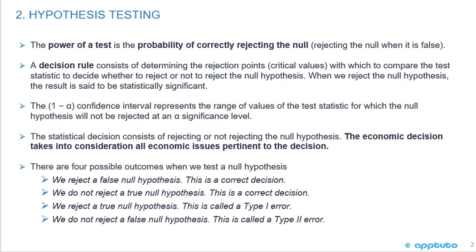As a quick review, there are four possible outcomes when we test the null hypothesis. One, we reject a false null hypothesis. This is a correct decision. Two, we do not reject a true null hypothesis. This is also a correct decision.